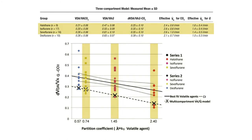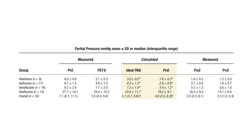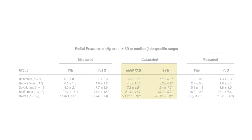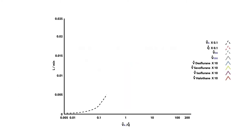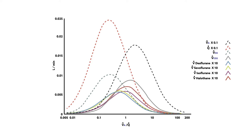For all agents other than desflurane, there was a significant difference between the ideal alveolar partial pressure and the end-capillary partial pressure calculated from the Riley model, which should be identical. The 50-compartment model showed how the predicted alveolar capillary gas uptake distributions for the agents shifted toward lower ventilation-perfusion ratios, with increased dead space as anesthetic solubility declined.